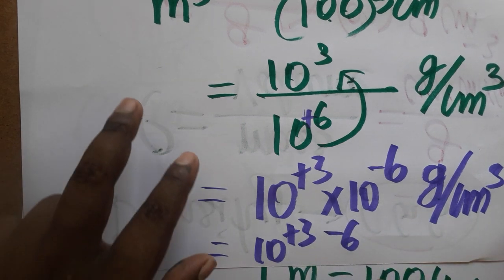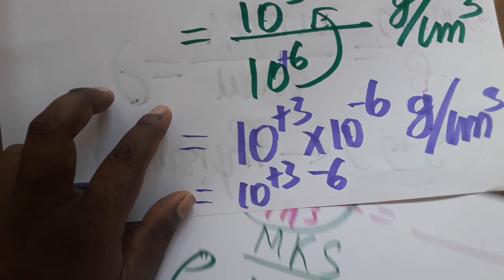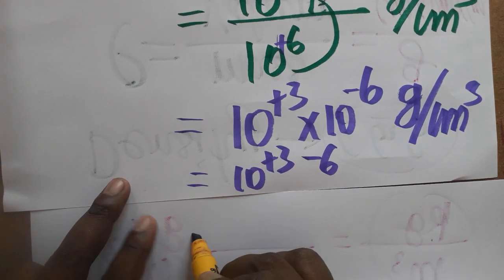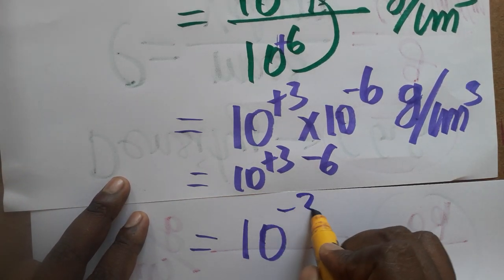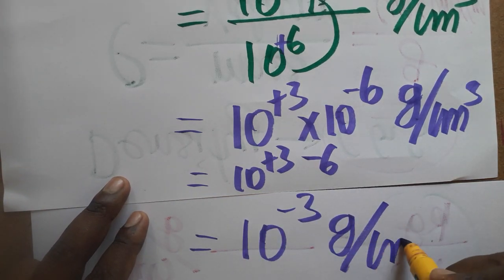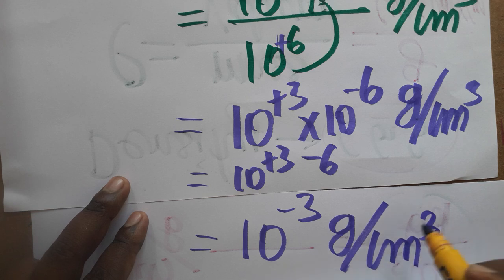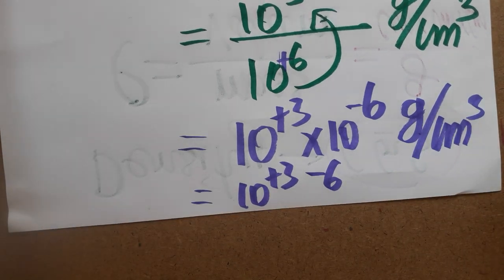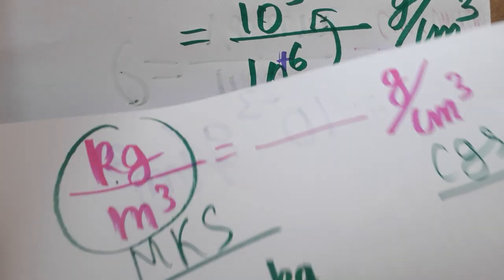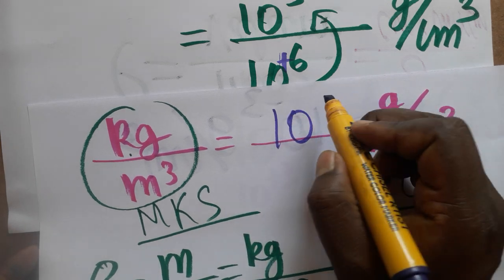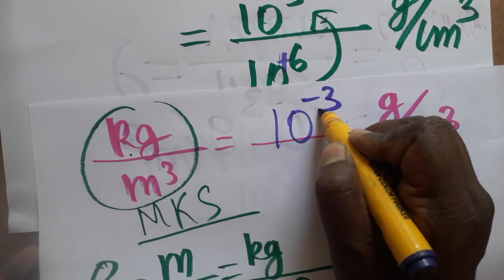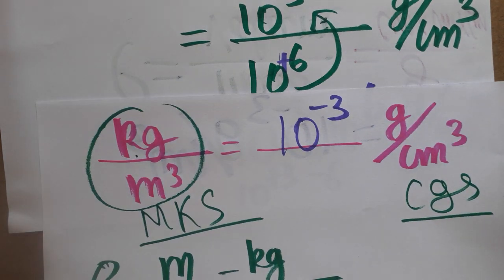The answer we are going to get is ten power minus three gram per centimeter cube. So one kg per meter cube equals ten power minus three gram per centimeter cube. Thank you everyone — if you like my channel, please subscribe.